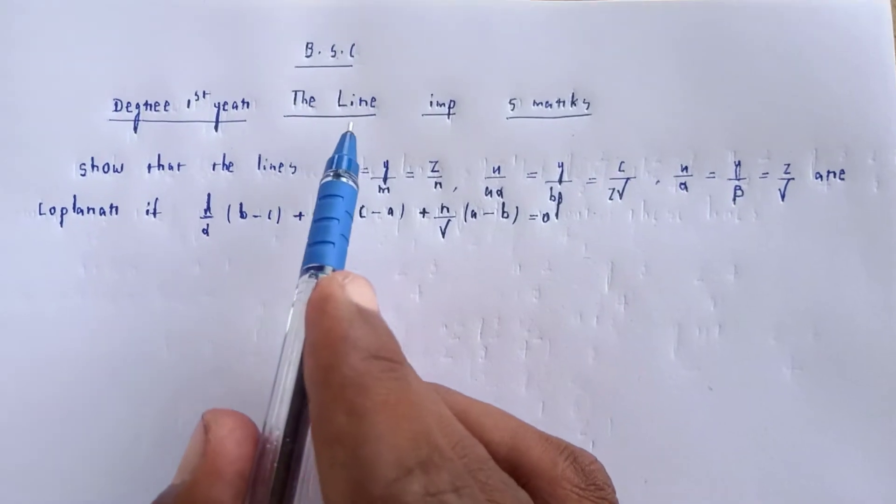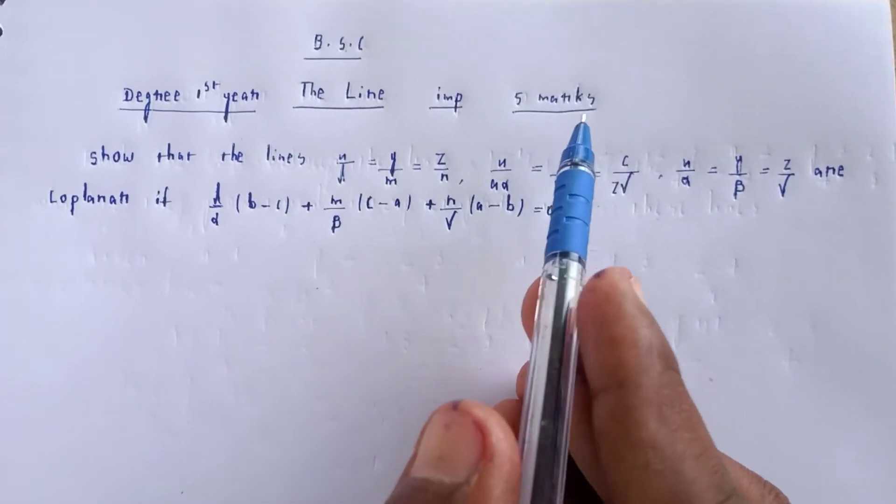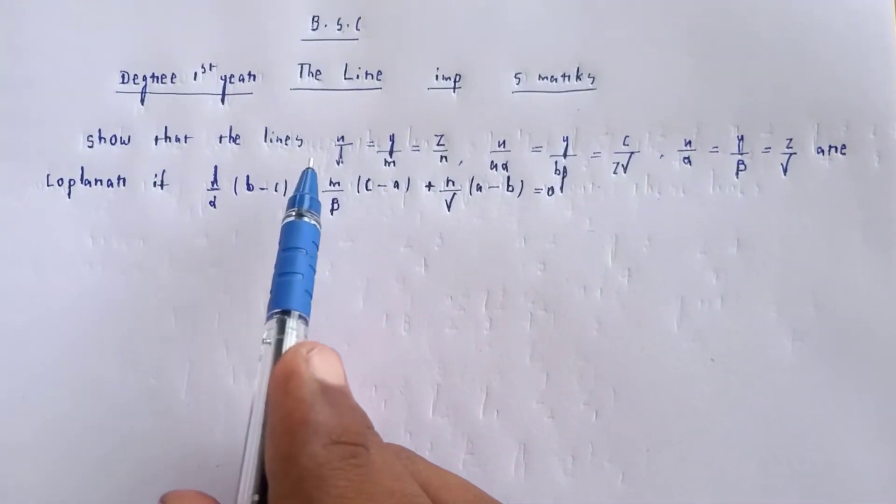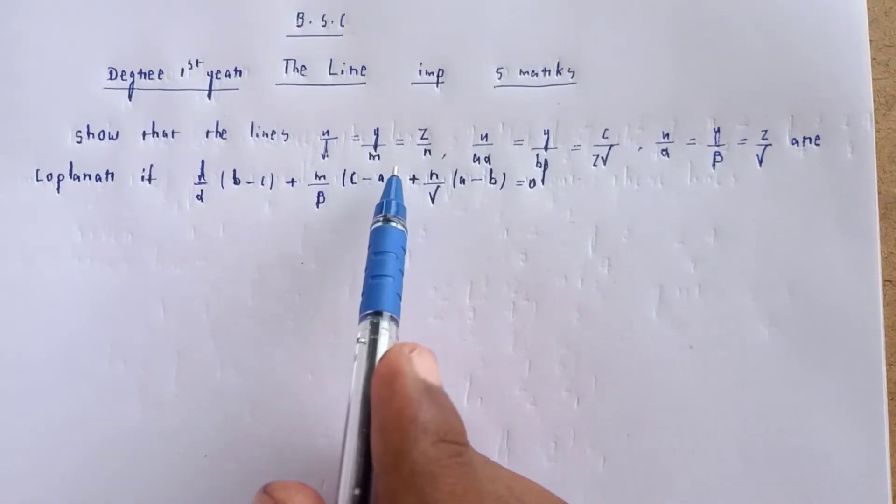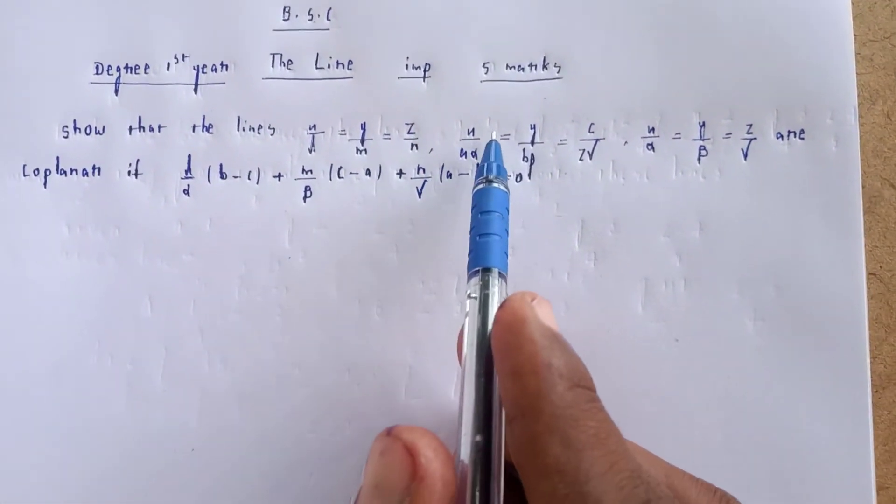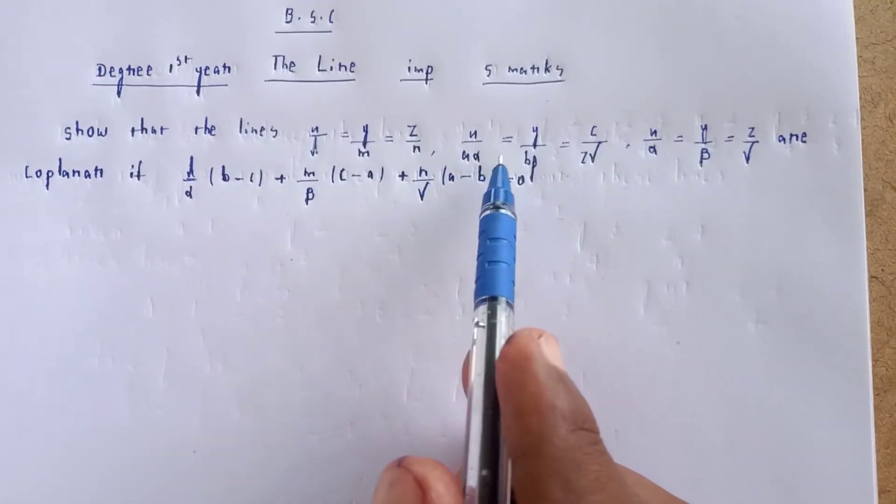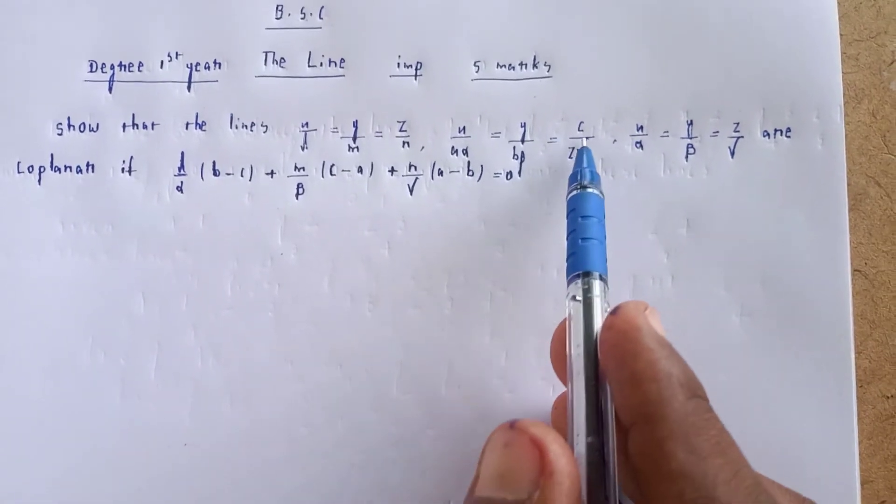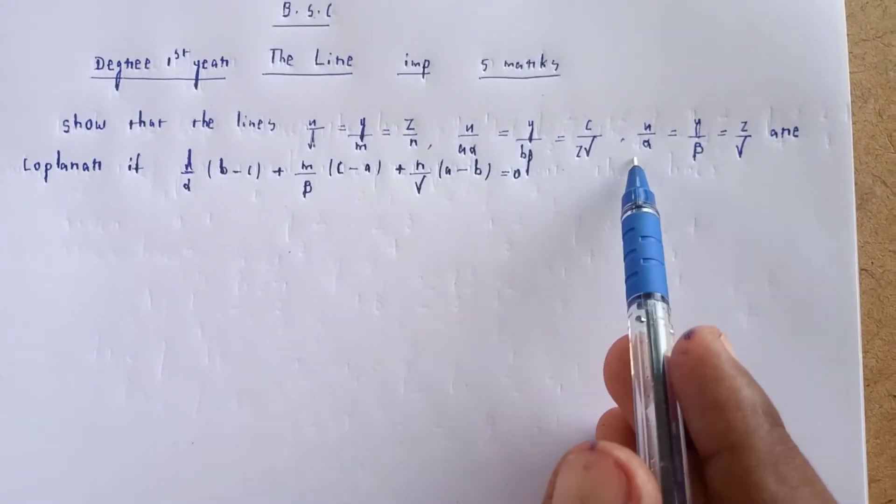Welcome to my channel BSC. The line import topic for today is to show that the lines x/l = y/m = z/n and the second entry x/α = y/β = z/γ are coplanar under certain conditions.